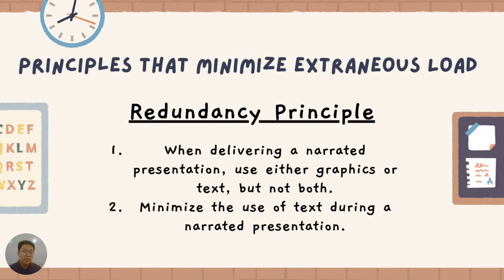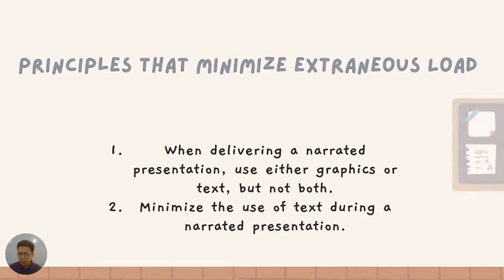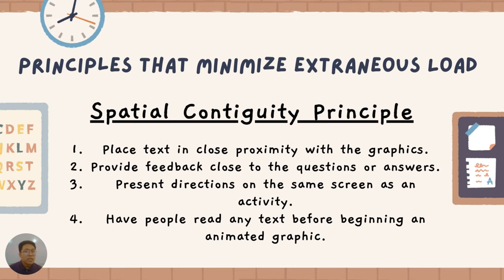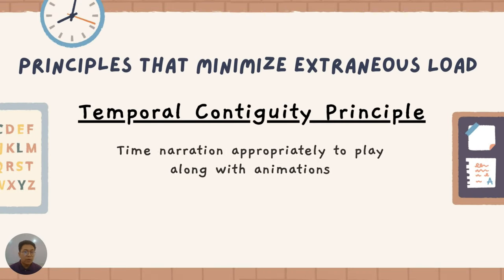Next is the redundancy principle, where when delivering a narrated presentation, you use graphics or text, but not both. Minimize the use of text during a narrated presentation so that students will not have overloaded information from reading and hearing simultaneously. The spatial contiguity principle allows you to place text in close proximity with your graphics, provide feedback close to the questions or answers, present directions on the same screen as the activity, and provide information about a particular picture before beginning an animated graphic. The temporal contiguity principle states that when recording, you need to time your narration appropriately to play along with your animations.